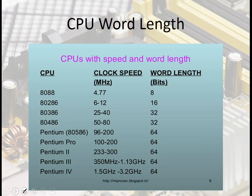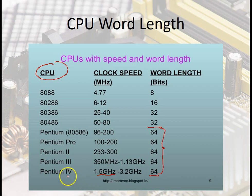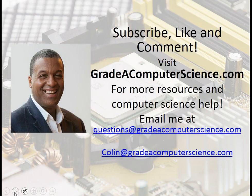In this chart you can see different CPUs and their clock speeds. These are early CPUs: the 8088, 286, 386, 486, the Pentium Pro, right up to the Pentium 4 at 1.5 gigahertz and 64 bits wide. The Pentium 4 ranges from 1.5 up to 3.2 gigahertz.